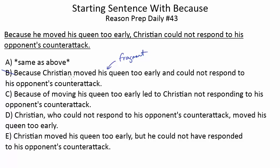There's no independent clause to attach onto this dependent clause — that's the real reason you're taught not to start a sentence with because, since a lot of times when you do that, you'll create a fragment. Now let's look at C: 'Because of moving his queen too early led to Christian not responding to his opponent's counter-attack.' We've seen in a previous video that 'because of' is a phrase the SAT test makers do not like. In this case it is not effective — choice C is wordy and awkward. You have to ask yourself what improvement C offers over the original choice A, and it's not clear. The phrase 'because of moving his queen too early led to Christian not responding to' is very awkward. The SAT would rather you just use 'because.'